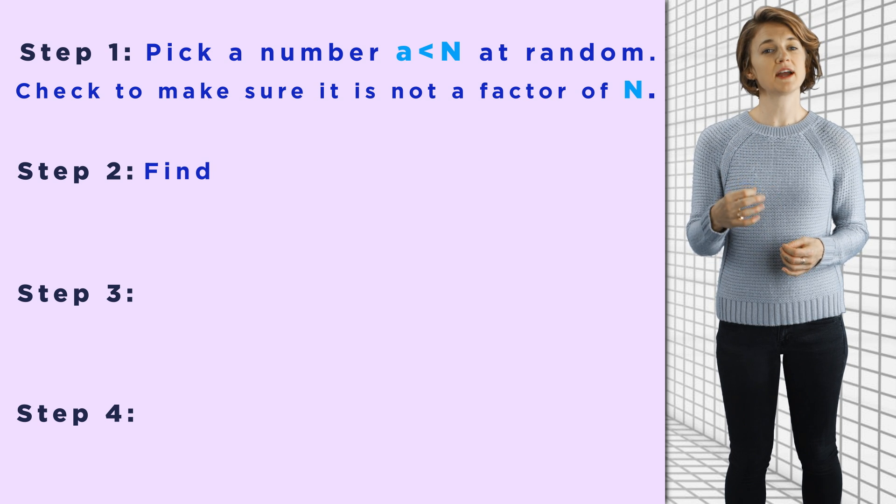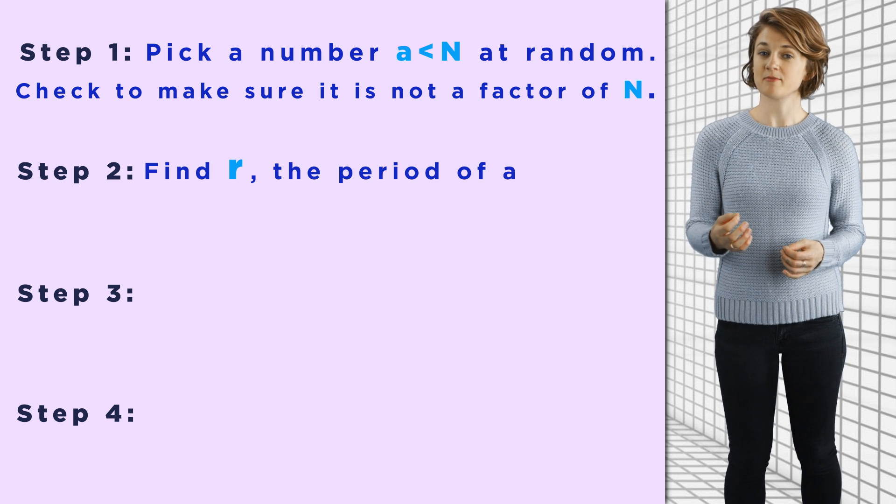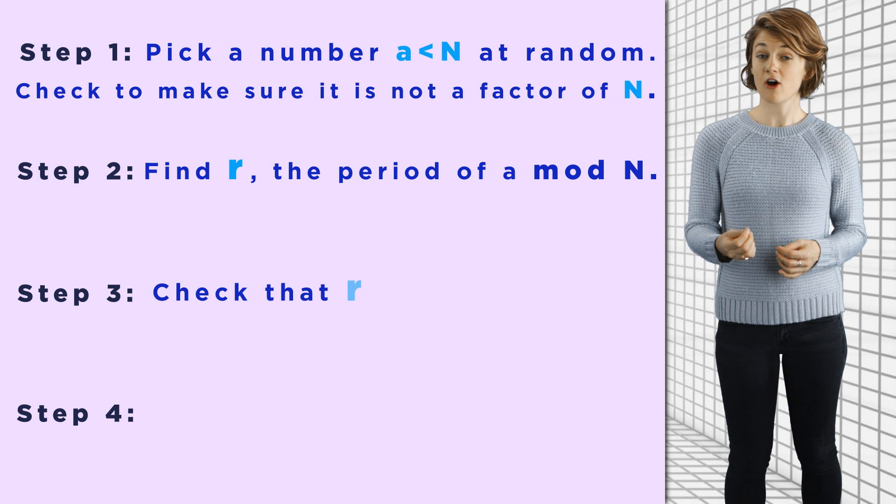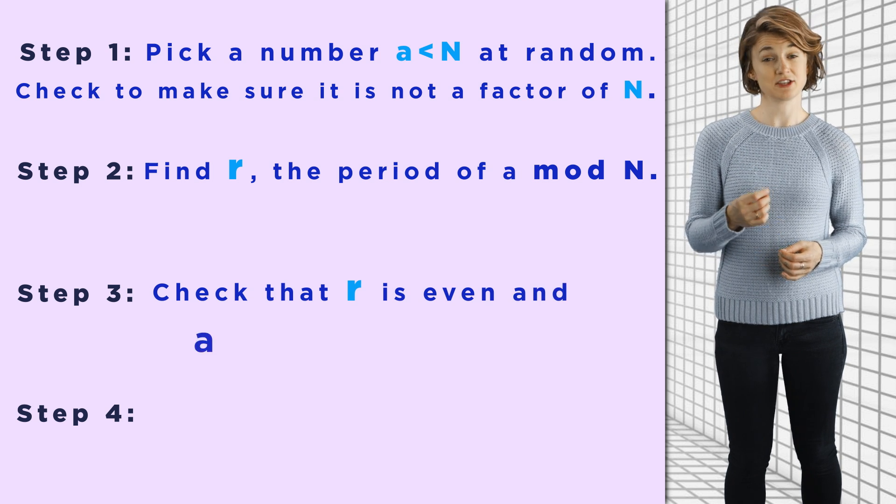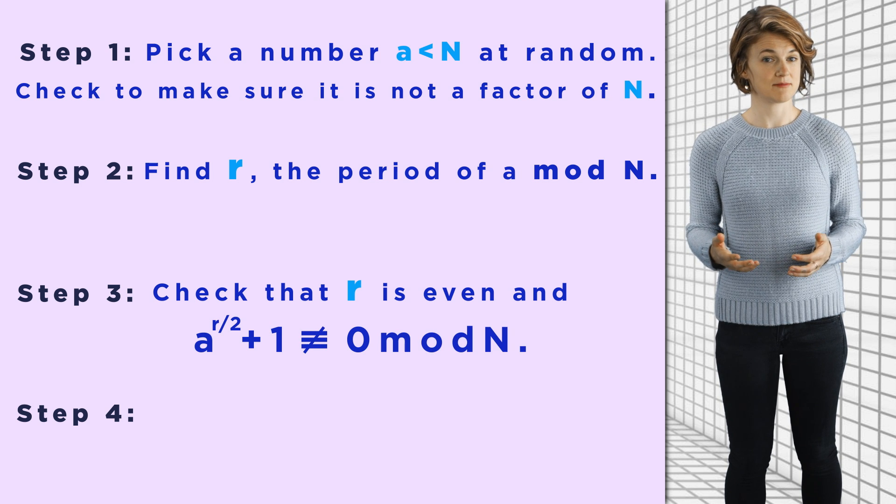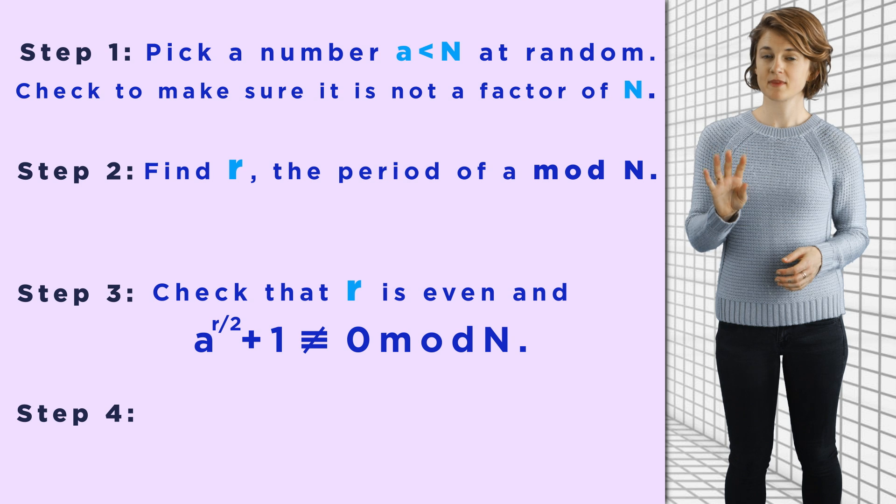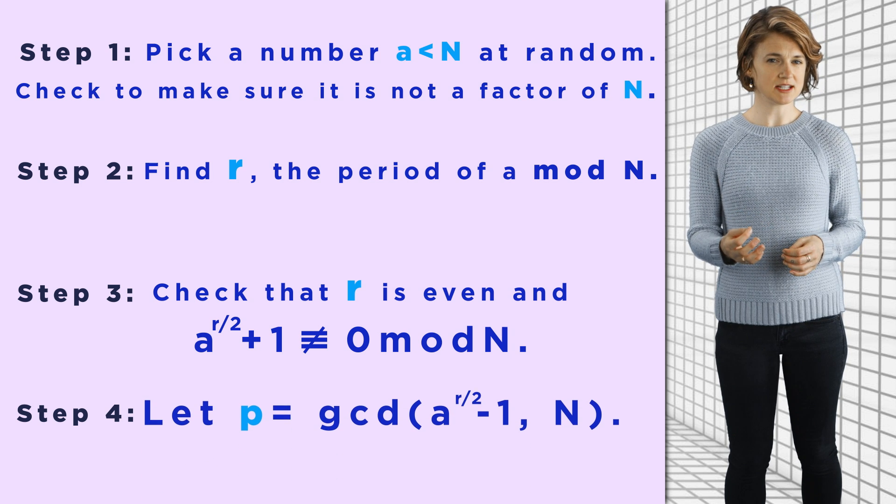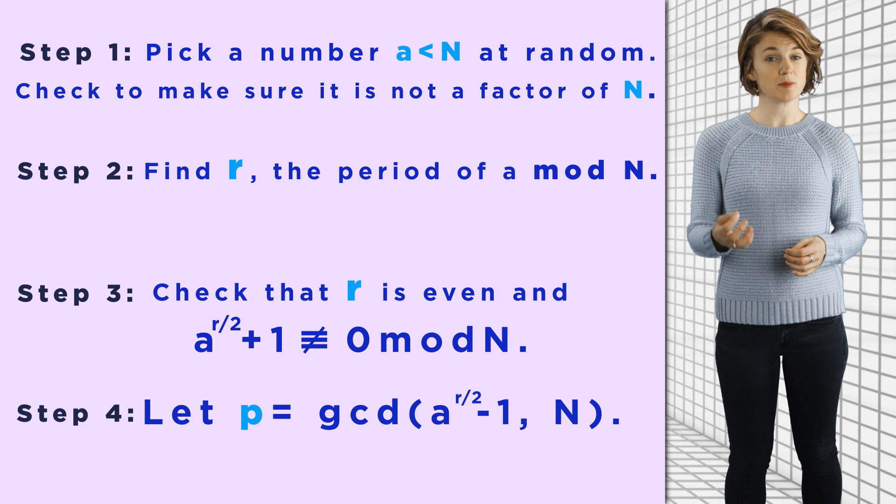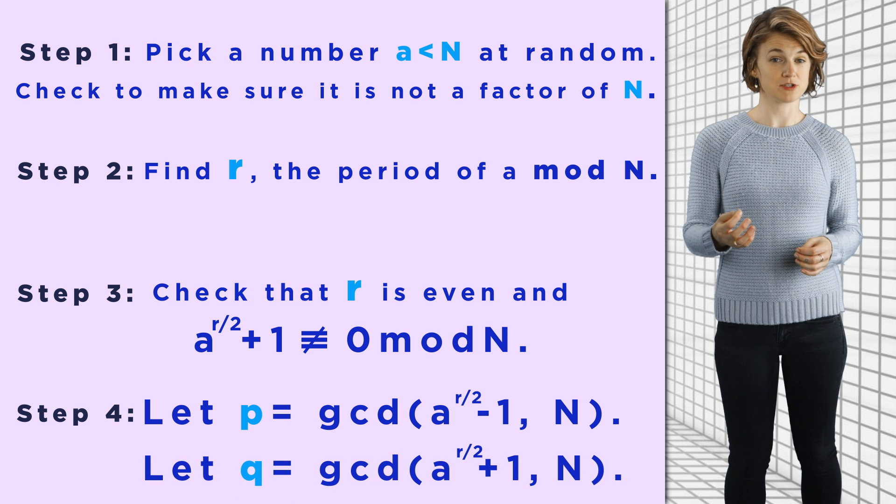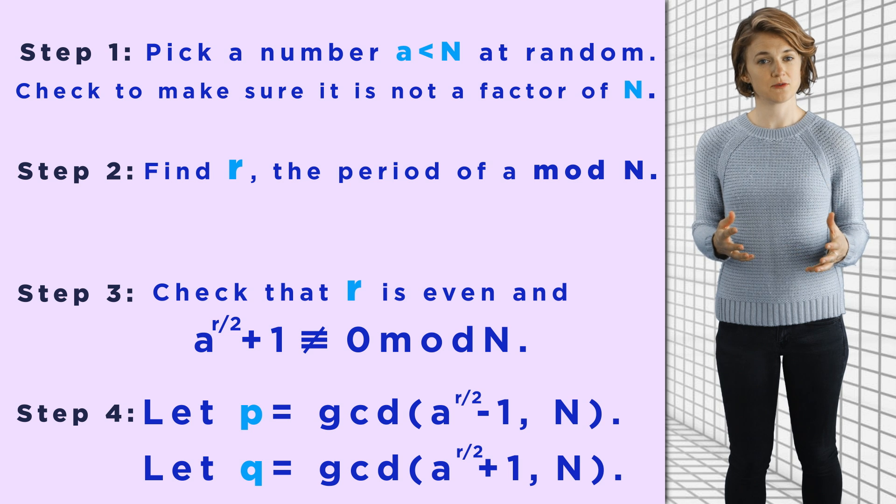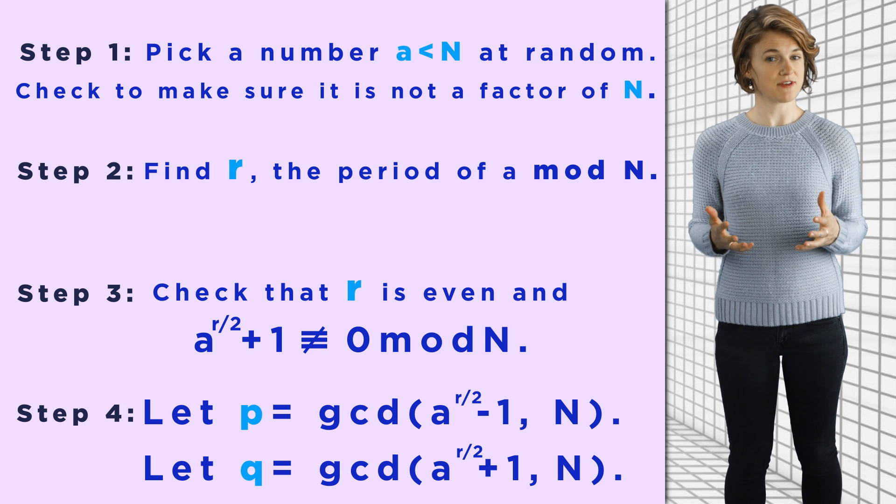Step two, find r, the period of a mod n. Step three, check that r is even and a to the r over 2 plus 1 is not congruent to 0 mod n. Step four, let p be the gcd of a to the r over 2 minus 1 and n and q be the gcd of a to the r over 2 plus 1 and n. Then you found p and q, the two prime factors of n.